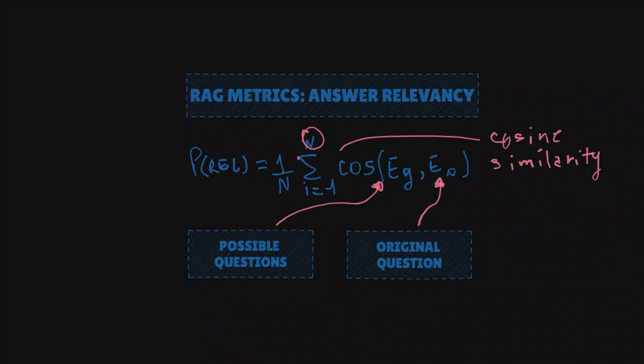This sum right here. The sigma symbol tells us that we are summing up all the cosine similarities and divided by N, giving us an overall relevance score.